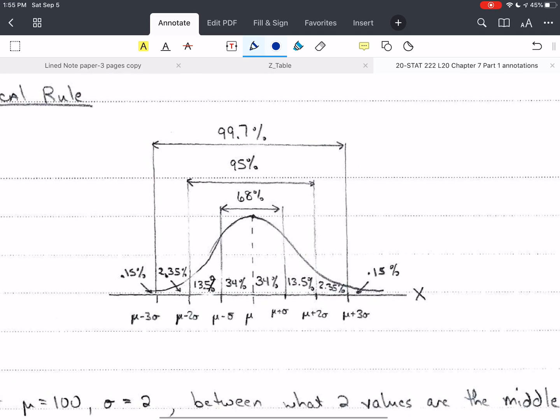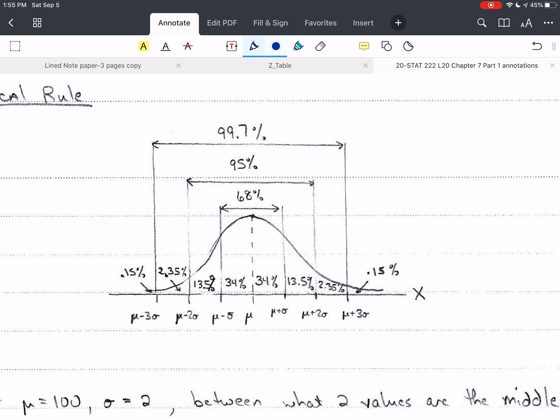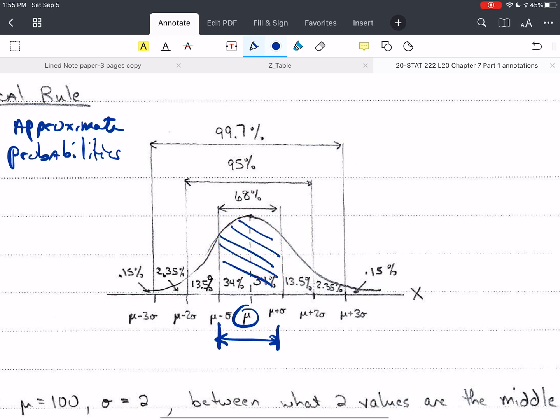So we're going to go over something called the empirical rule. Now, it's an approximation. These are approximate probabilities or percentages. And so what this is saying is mean mu is in the center. And if I go out one standard deviation to each side of the mean, what proportion of the population or what percentage of the area is under the curve between those two values?